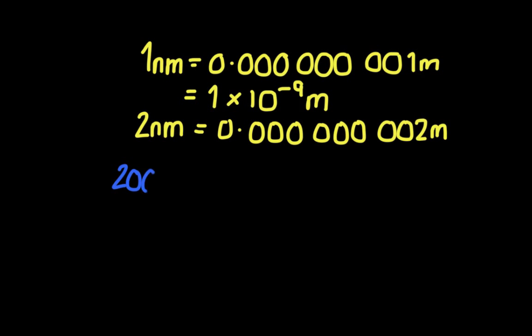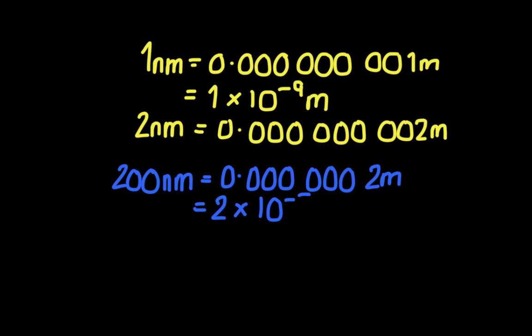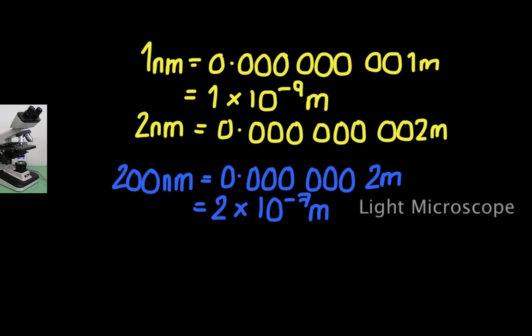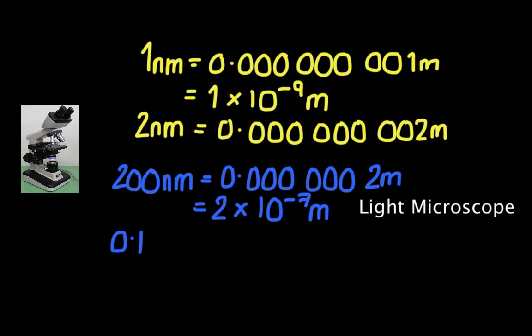And so if you multiply that up by 100, 200 nanometres actually ends up being 2 times 10 to the minus 7 metres. So we're still talking very small values here. Now, remember that the 200 nanometres was the resolution of our light microscope.